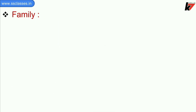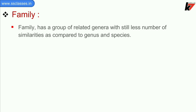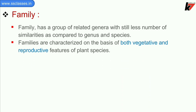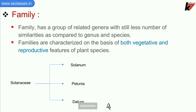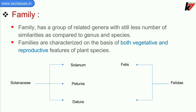Now we will see family. Family has a group of related genera with still fewer similarities as compared to genus and species. Families are characterized on the basis of both vegetative and reproductive features of plant species. For example, family Solanaceae includes genera Solanum, Petunia, and Datura. Family Felidae is an animal family which includes genera Felis and Panthera.